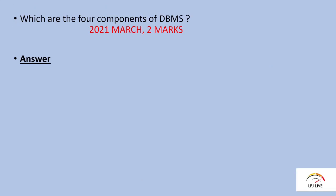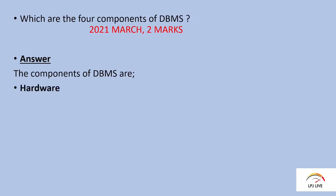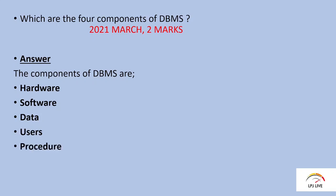In 2021, which are the four components of DBMS? The components are: Hardware, Software, Data, Users, and Procedures. Note that there are actually five components, but the question asks for four.